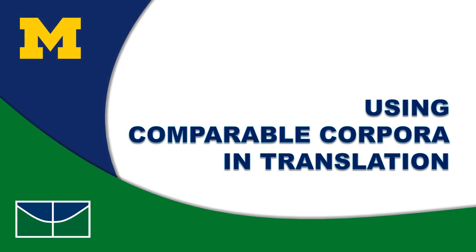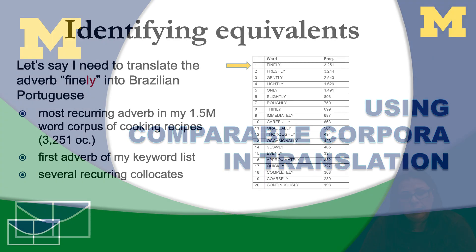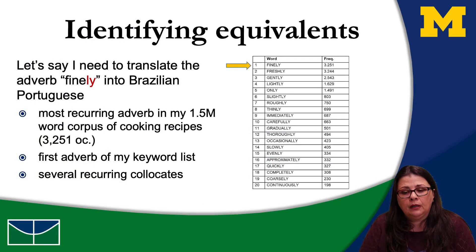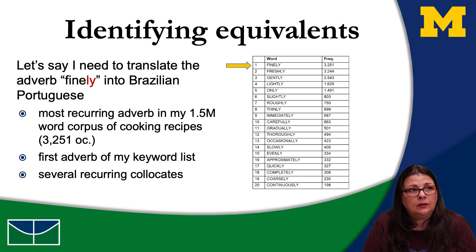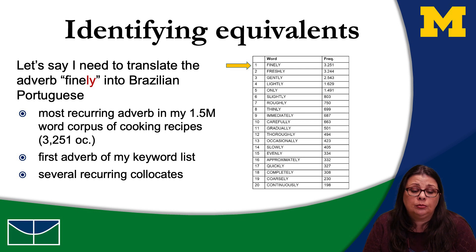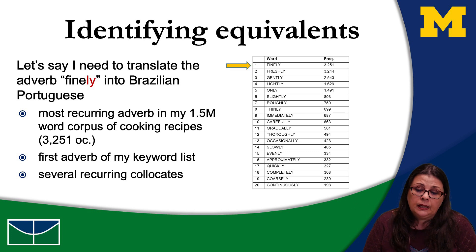But how can I use comparable corpora to solve translation problems? Let's have a look at some practical examples. Let me give you an example with cooking recipes, which is one of my areas of expertise in translation. Let's say that I need to translate the adverb 'finely' — which appears a lot in recipes in English — into Brazilian Portuguese. When I look at my corpus, I can see that 'finely' is the most frequent adverb in English.